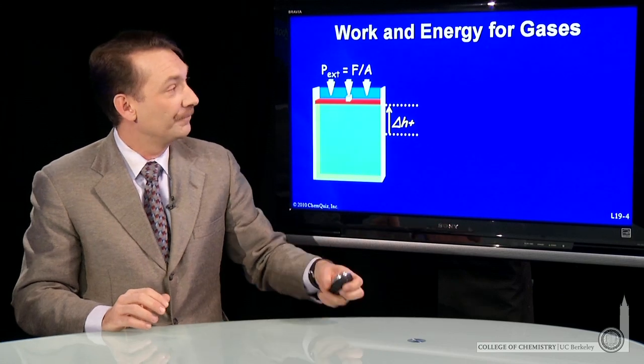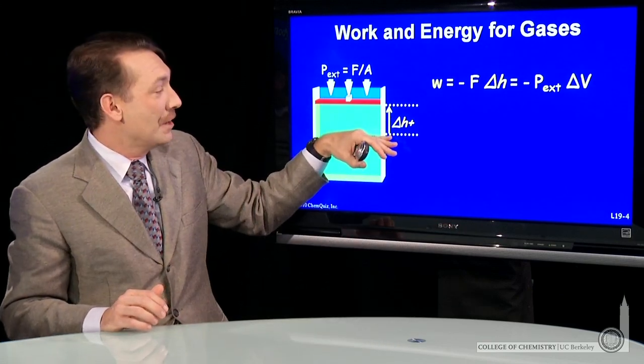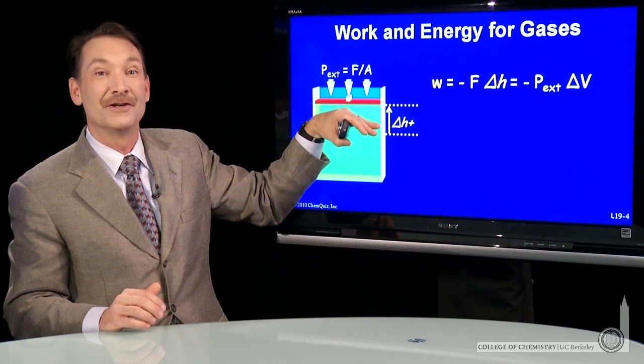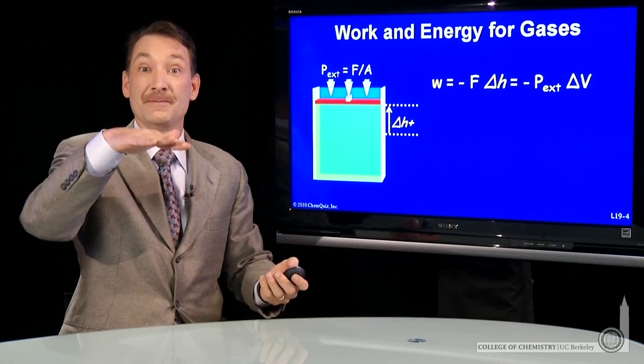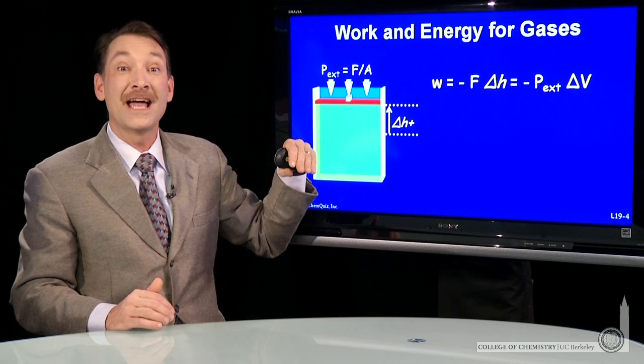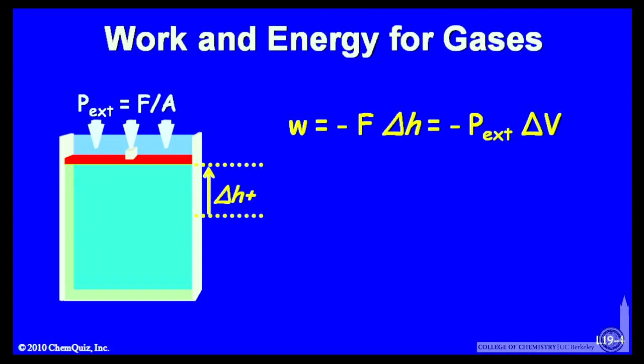Let's look at the work. If I do work for a gas, I push a cylinder up in a gas. I change the height of this cylinder. Work is just force times distance, or in this case, force times the height. For an ideal gas, we can write it as the external pressure times the change in volume.